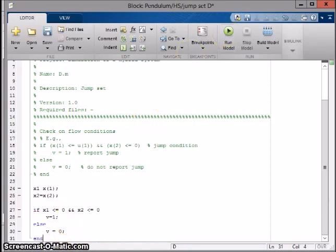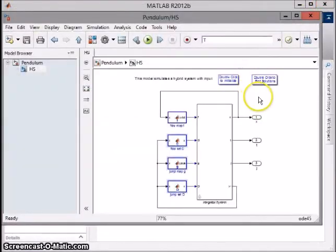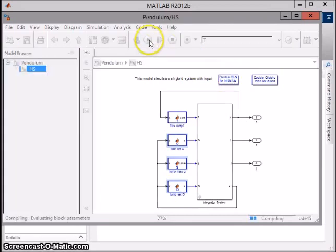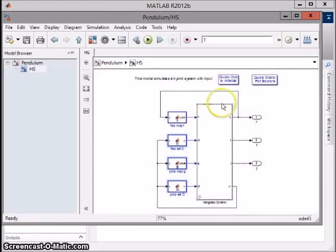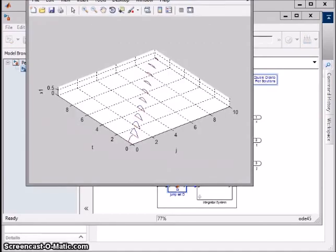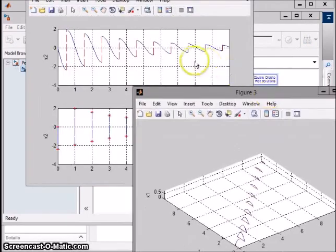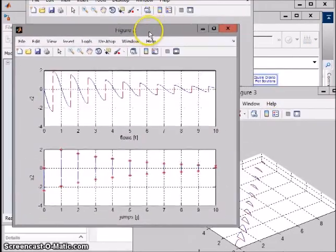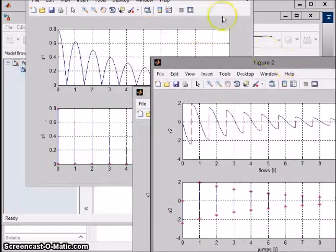Now we're ready to run the final simulation. It's already initialized, so run it. Now double click to plot the solutions. Now you can see that with each jump, x1 and x2 begin to decay until they will eventually reach zero.